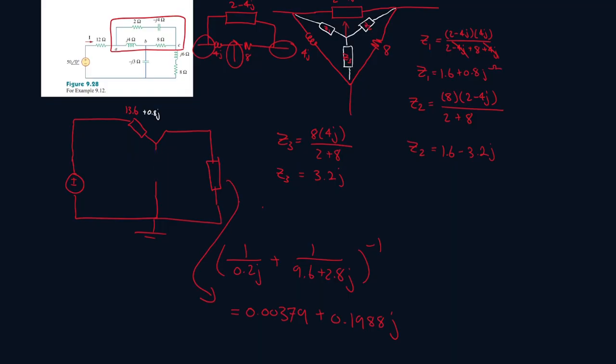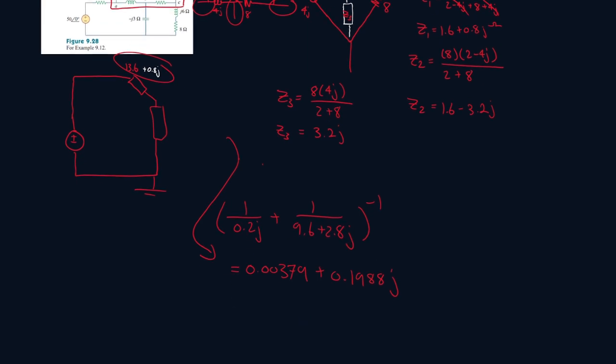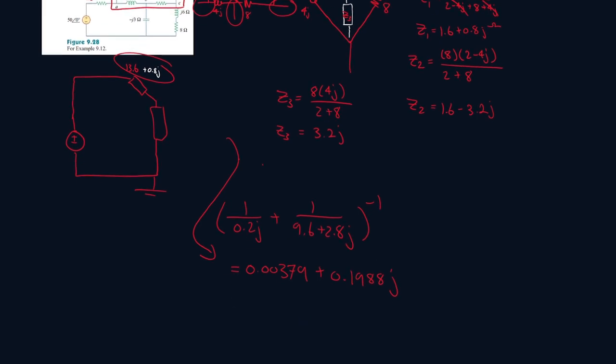Then I'll just add this and this together, so it'll be 13.6 plus 0.00379, that's just 13.603 plus 0.1988 plus 0.8, so that's just 1j. So we'll redraw the circuit to be like this: 13.603 plus j, and you're looking for the current here.